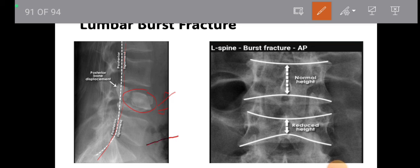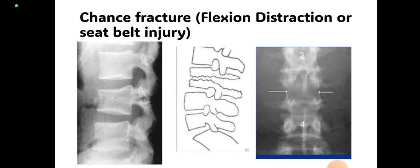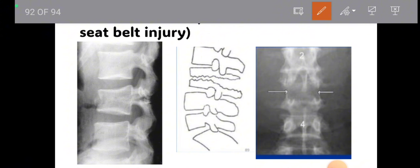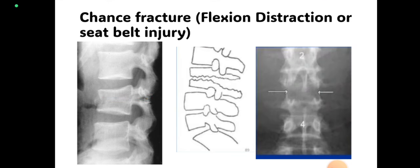Here is the lateral and frontal view of burst fracture — reduced vertebral body height and fragments of bones are visible. Chance fracture is a flexion-distraction or seat belt injury caused by hyperflexion of the spine during a road traffic accident. A horizontal split is present — in the anterior part there is compression and in the posterior part there is distraction. You can see the horizontal split in the lateral view representing the chance fracture along with loss of vertebral body height.